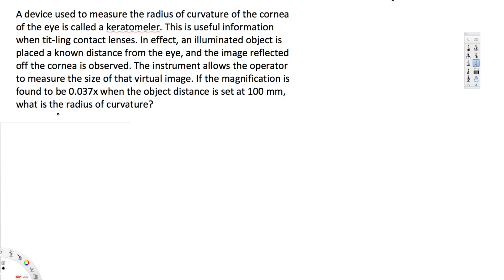Here they're asking to find the radius of curvature, which can be calculated using the formula r = -2f. But to find this, we need to know the focal length, which we don't have. To find focal length, we need both the object distance and image distance. They only provided the object distance of 100 millimeters, so we have to find the image distance. We have the magnification.